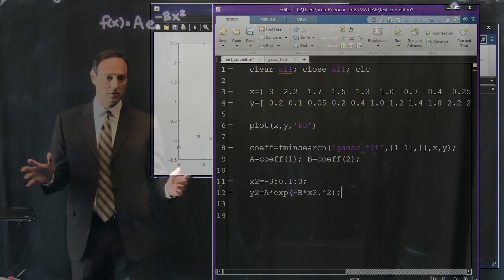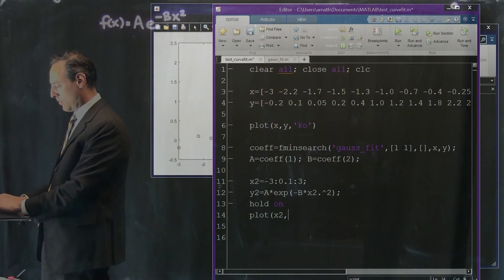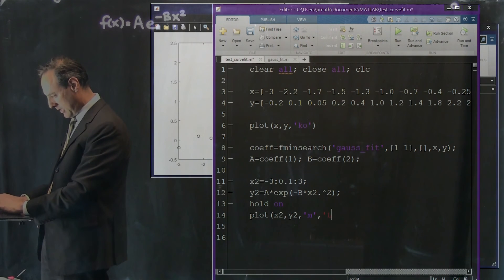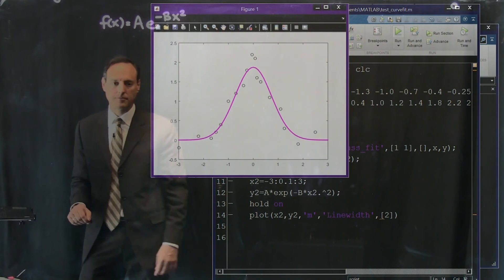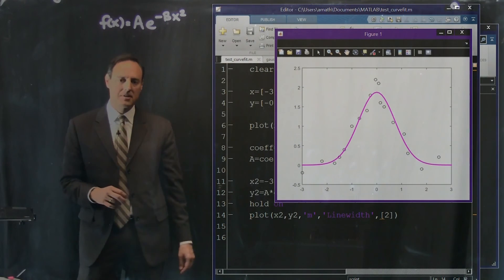And so my function is a times e to the negative b times x2 squared. I just defined the function. And if I put a hold on to the plot, I can now plot x2, y2. And let's make that in magenta with a line width of 2. Okay, let's see how we did. There's how we did. It's kind of as simple as that, except for the guessing part.